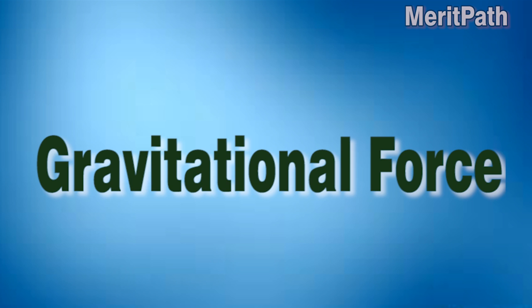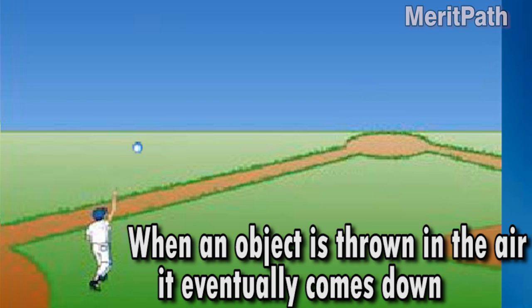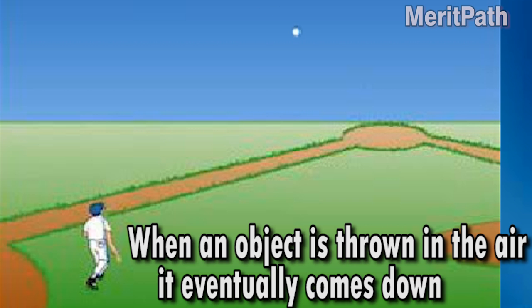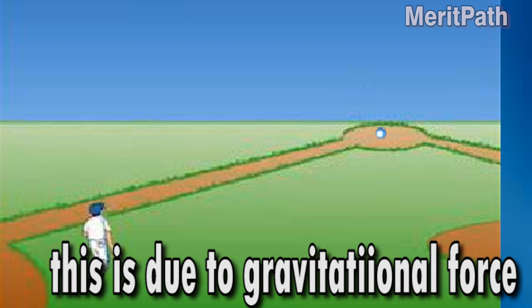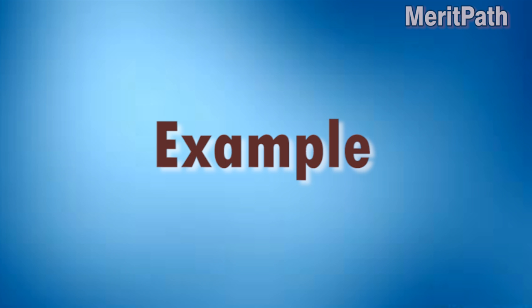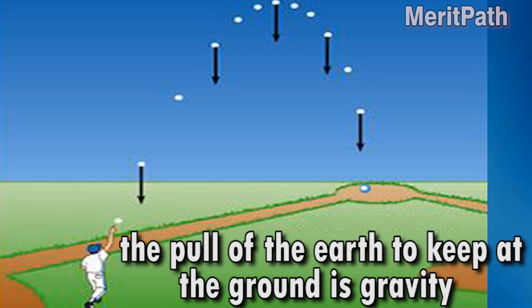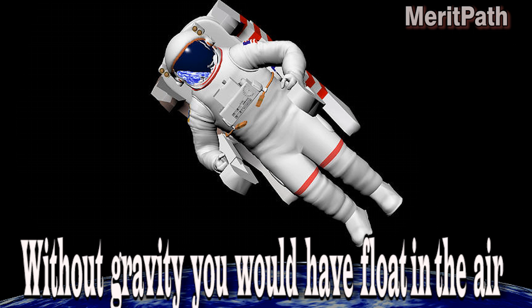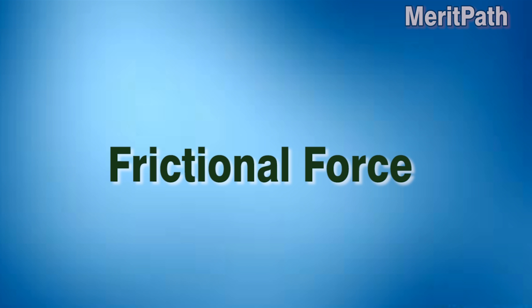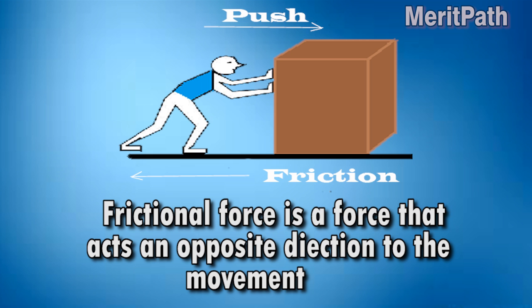Gravitational force: when an object is thrown in the air it eventually comes down — this is due to gravitational force. For example, the pull of the earth keeps you on the ground. Without gravity you would float in the air.